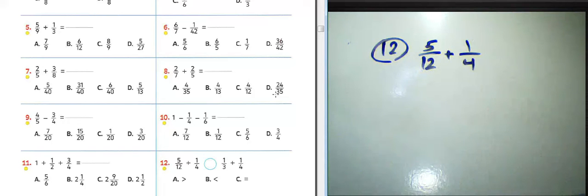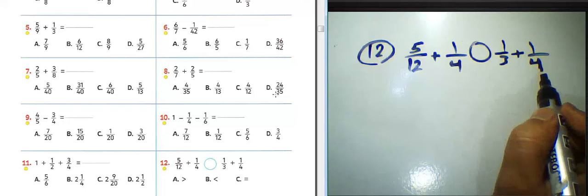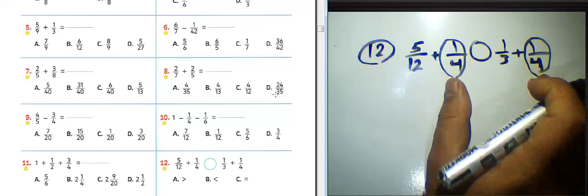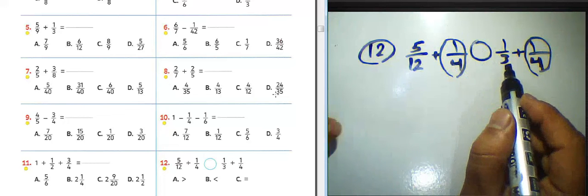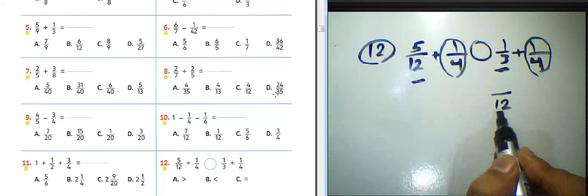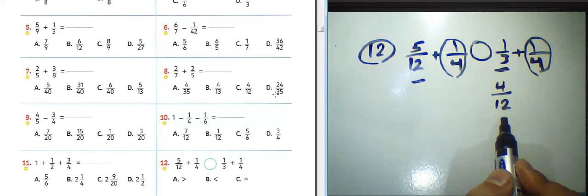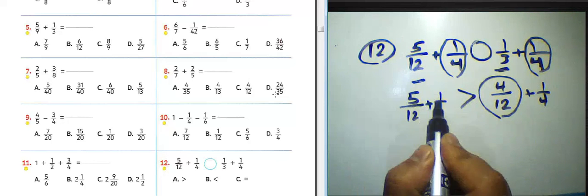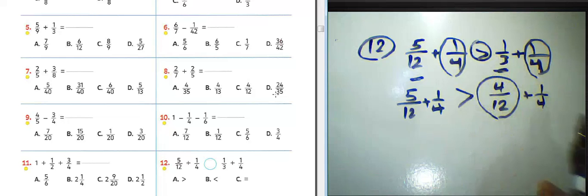Question number twelve: 5 over 12 plus 1 over 4, or 1 over 3 plus 1 over 4 — we need to determine which is greater. We can cancel the 1 over 4 from both sides, and compare 5 over 12 with 1 over 3. Convert 1 over 3: the LCM of 3 and 12 is 12. 12 divided by 3 equals 4, and 1 times 4 equals 4 over 12. Since 5 over 12 is greater than 4 over 12, we must choose the greater-than sign: 5 over 12 plus 1 over 4 is greater than 1 over 3 plus 1 over 4.